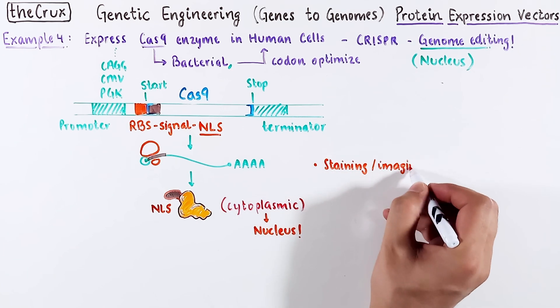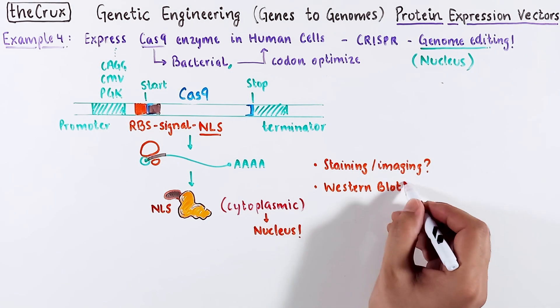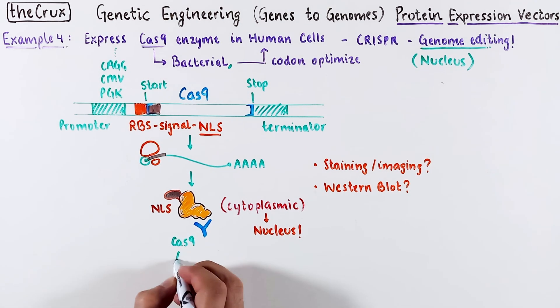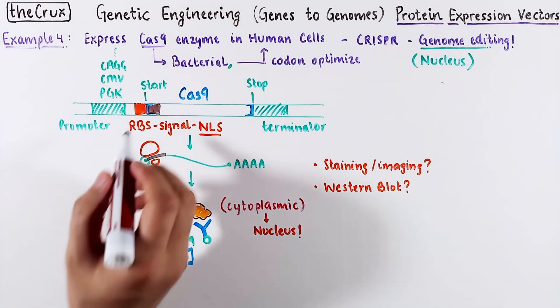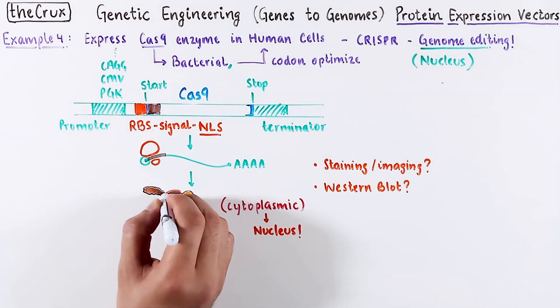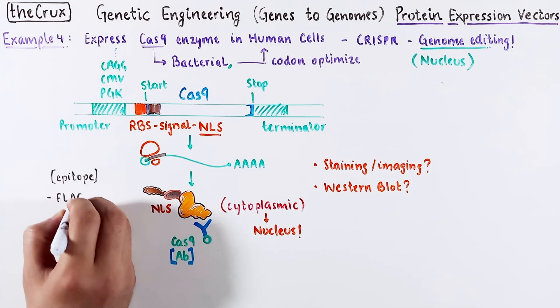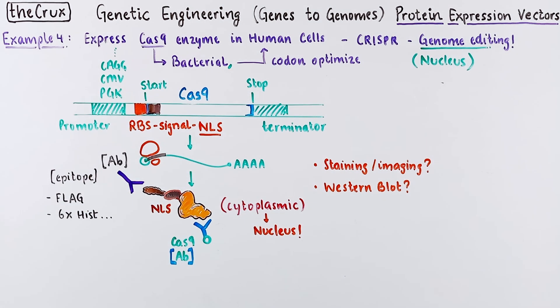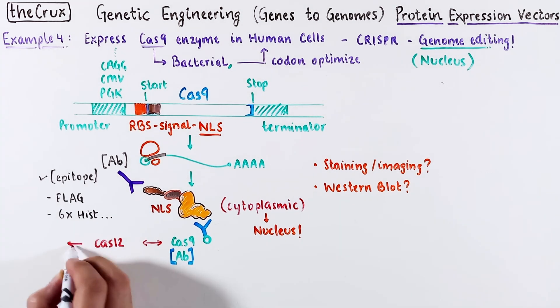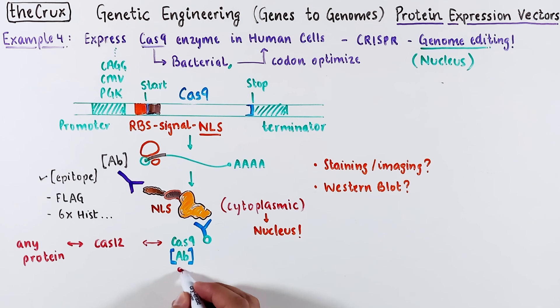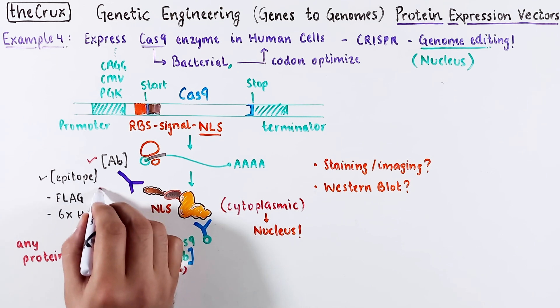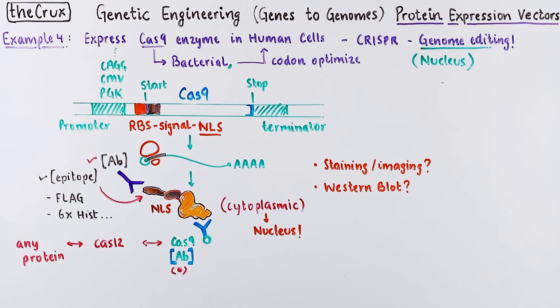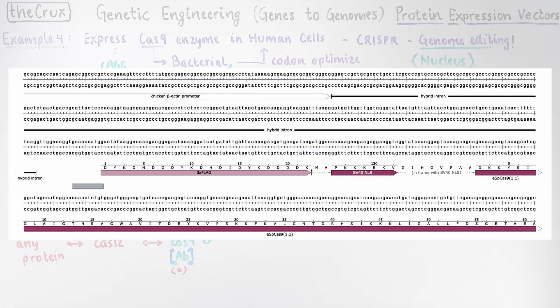What if you also wanted to image or stain Cas9 or maybe do a Western blot? You can get an antibody against Cas9 and you're all good. Alternatively, you could also add a small epitope to your protein. We discussed this in the previous video. The beauty here is that you can have antibodies against this custom epitope. And tomorrow, if you decide you don't want to use Cas9 but instead want to switch to Cas12, or any other protein for that matter for any application, you don't have to buy a new antibody for the new protein. Just add the same epitope to all your proteins and use the same antibody again and again.